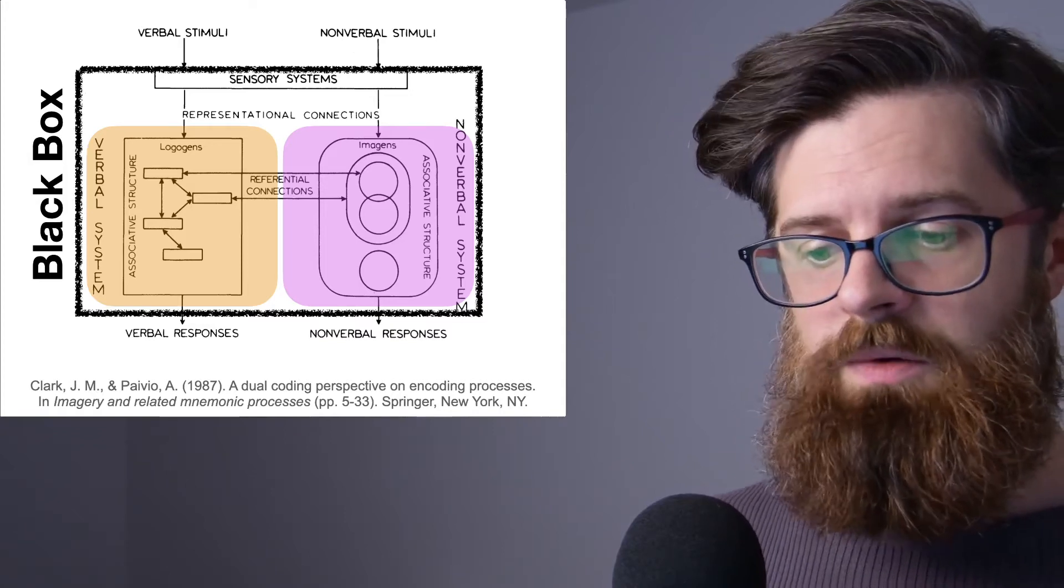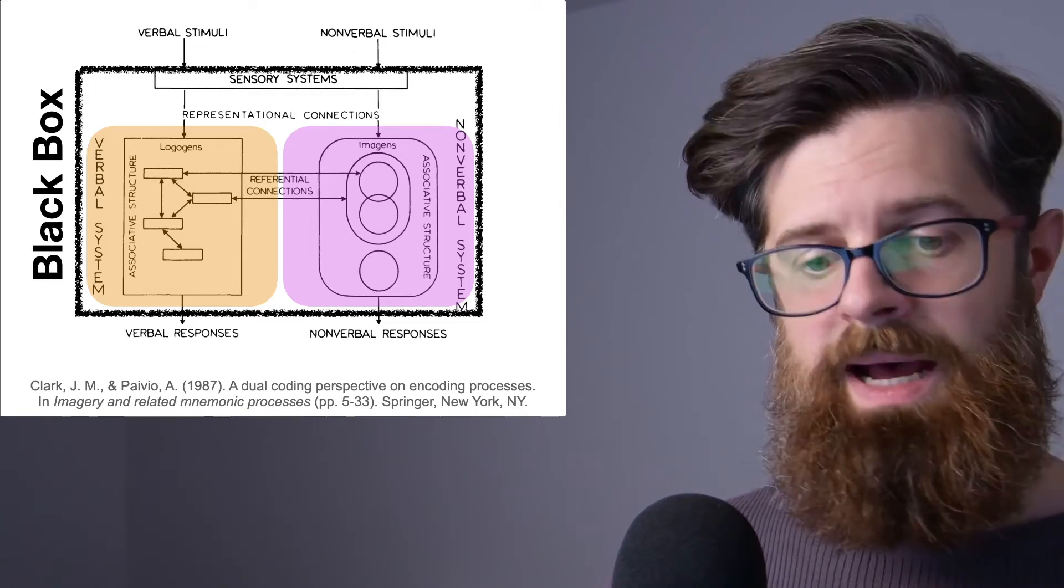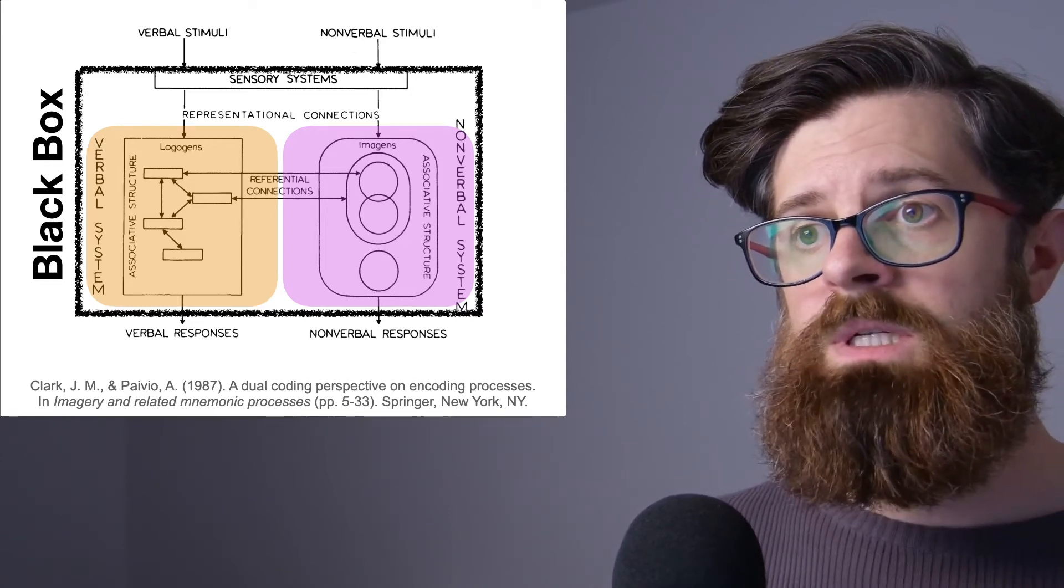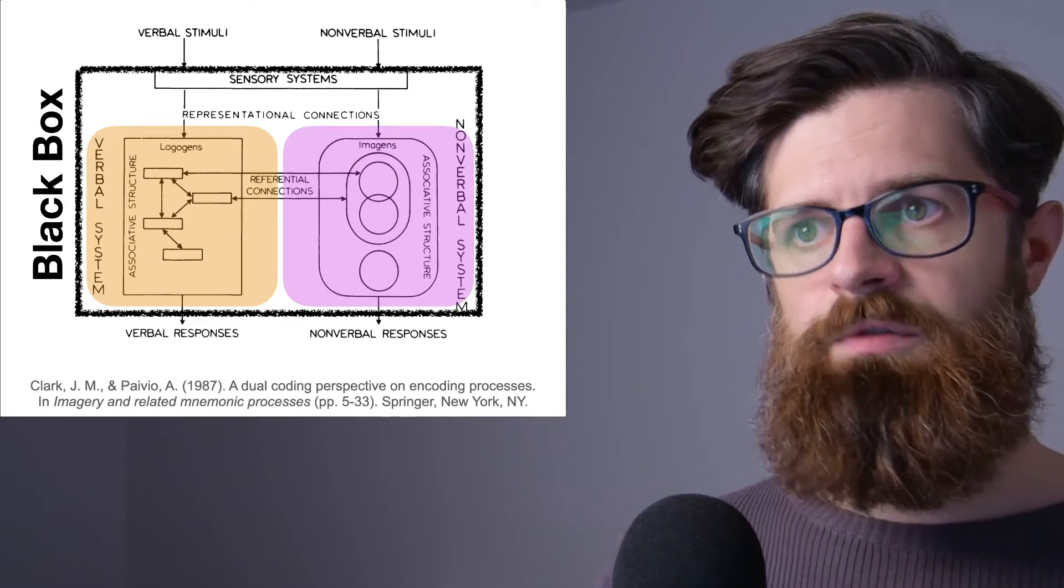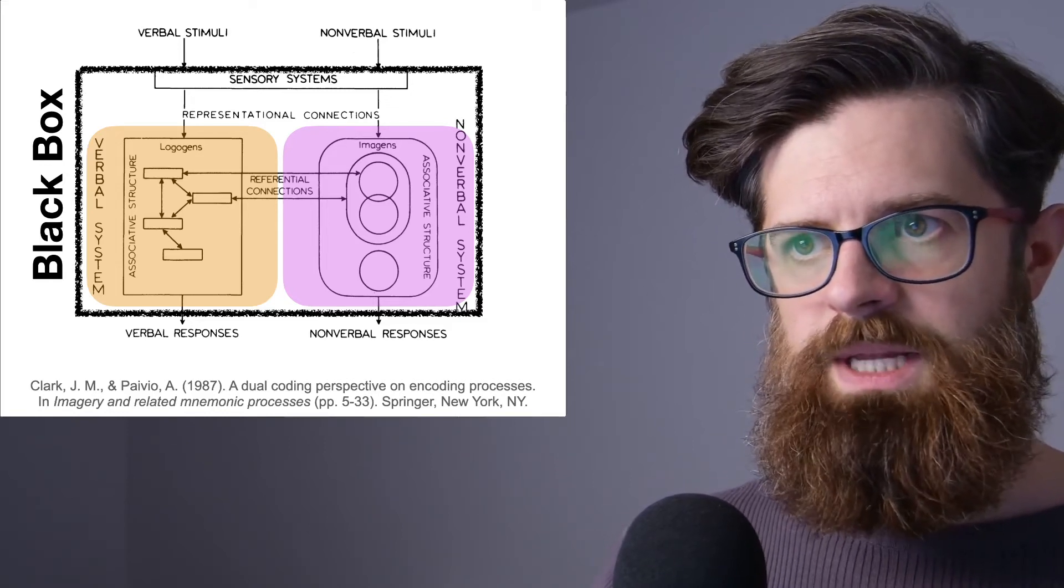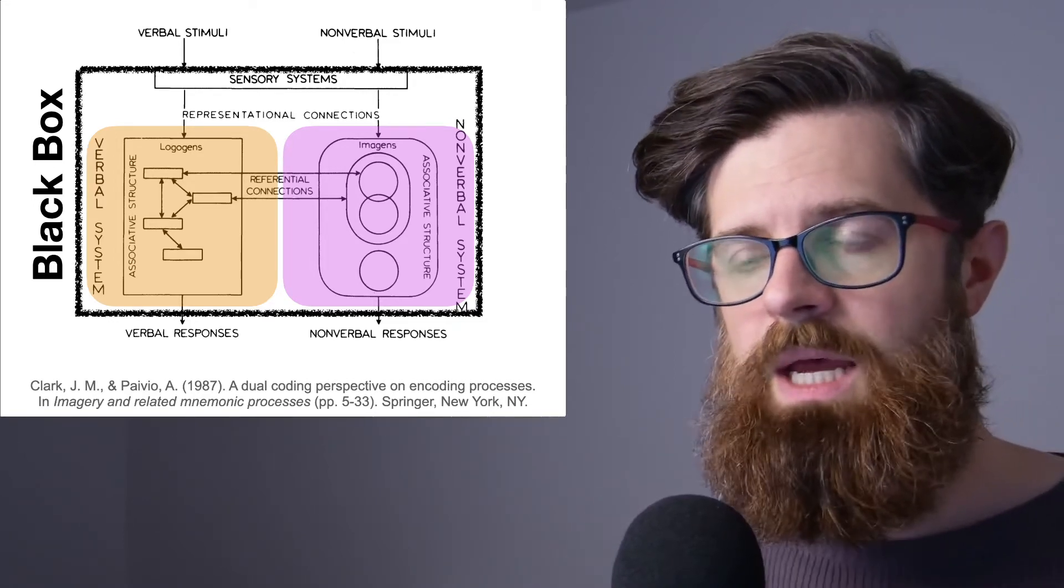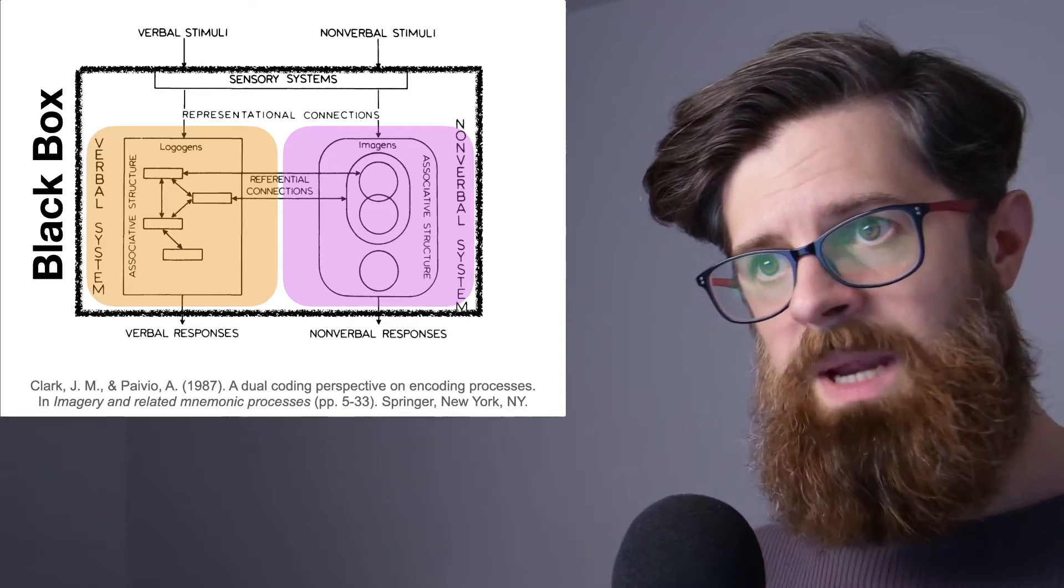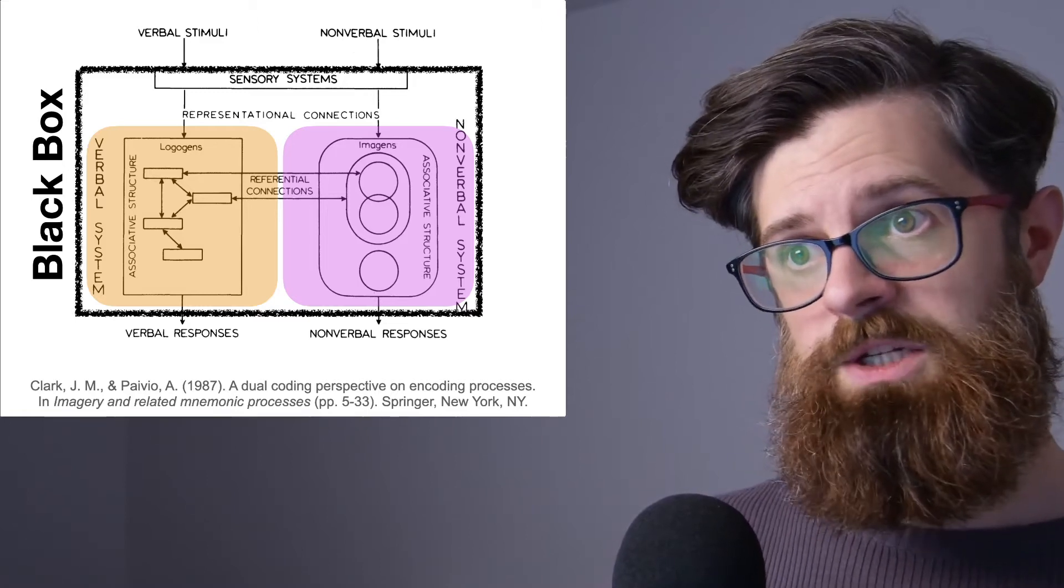So a very simple way of understanding dual coding theory is that it's attempting to say there's something going on inside the black box, and we're proposing that there are these two separate systems. One that focuses on verbal things and another one that focuses on nonverbal things. What we can see though behind these boxes is that we have some horizontal arrows labeled as referential connections. This is basically saying that there might be some flow of information from the verbal system to the nonverbal system or from the nonverbal system to the verbal system.